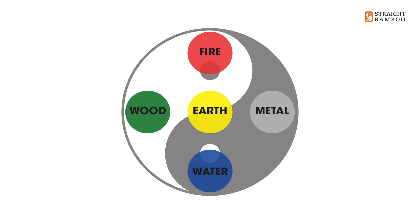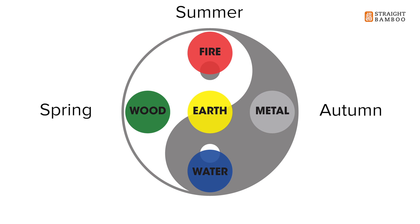Now we don't just have summer and winter on the north and south — we also have autumn and spring. We start to understand the year in a larger cycle and break down yin and yang into an extension of those categories. We understand how to live in accordance with those seasons and how those energetic qualities differ: the wind in spring, the heat in summer, the dryness in autumn, the cold in winter.